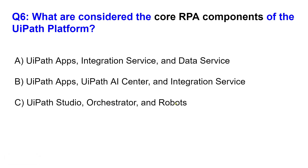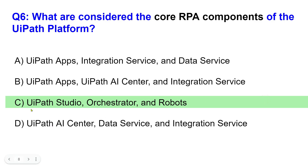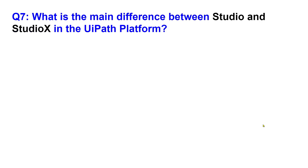Option C: UiPath Studio, Orchestrator, and Robots. Option D: UiPath AI Center, Data Service, and Integration Service. Now look at the question — core RPA components of the UiPath platform, which are the core products? Please comment which answer you think is correct. The right answer is C.